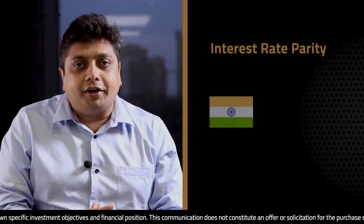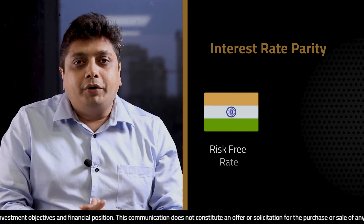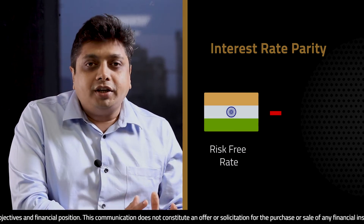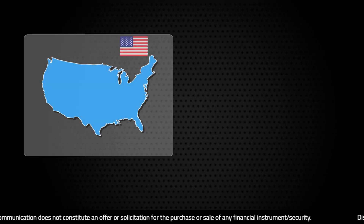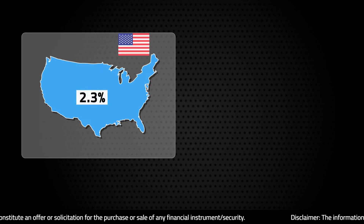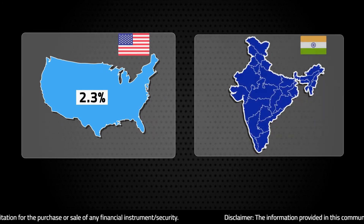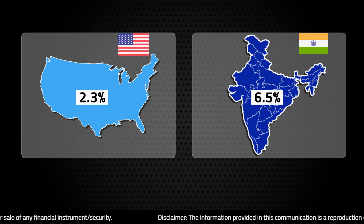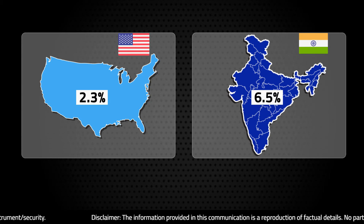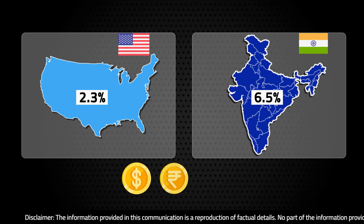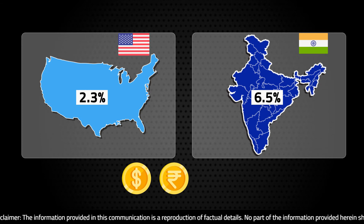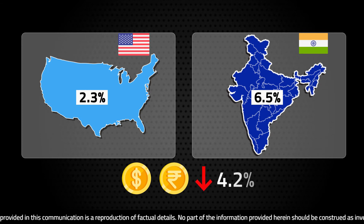For example, the risk-free rate of the US is 2.3%, whereas the risk-free rate of India is 6.5%. This difference of 4.2% indicates that the rupee will depreciate against the dollar by approximately 4.2% on average.